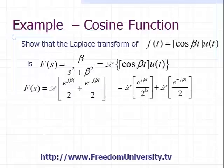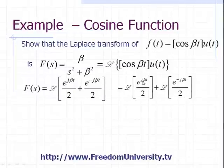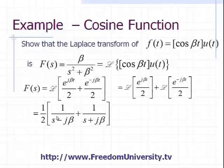The first term is just e to the j beta t divided by 2. And we're going to take the Laplace transform of this. But this is just an exponential function where instead of alpha, we have j beta.